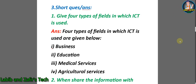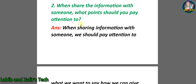Now let's go through some short question answers. Number one: Give four types of fields in which ICT is used. Answer: Four types of fields in which ICT is used are: number one, business; number two, education; number three, medical services; number four, agricultural services.